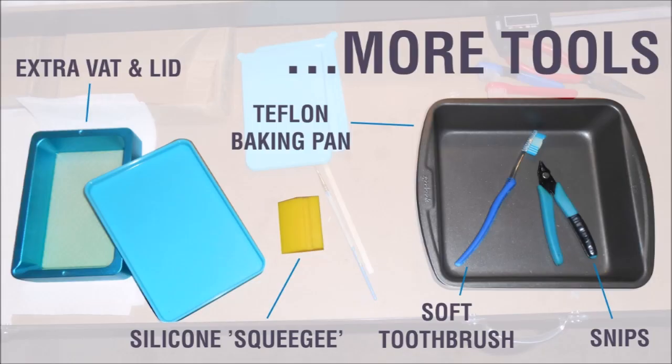Additionally, I have an extra vat along with some 3D printed lids for storage and protection from UV rays. A small silicone squeegee that's helpful for cleaning out the vat. A soft toothbrush, some snips, and a teflon baking pan. I see a lot of people using silicone mats, and I think those work well if you have a large area to work with. But teflon is also non-stick, and the metal pan is a bit more durable when your scraper slams down into it while removing prints off the build plate.